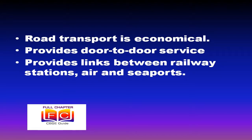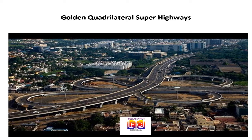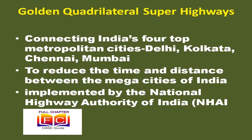Road transport provides links between railway stations, air and seaports. In India, roads are classified into six classes according to their capacity. The Golden Quadrilateral Superhighways is a network of highways connecting India's four top metropolitan cities — Delhi, Kolkata, Chennai and Mumbai. The major objective of these superhighways is to reduce the time and distance between the mega cities of India. These highway projects are being implemented by the National Highway Authority of India.